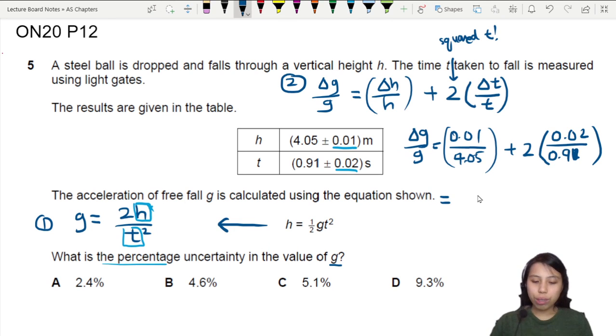You want to convert fraction to percentage? You times 100. So we times 100. Therefore our percentage in g will be times 100 is what? 4.6%.